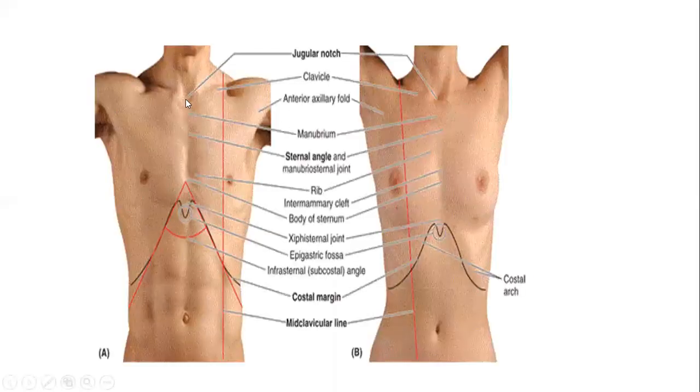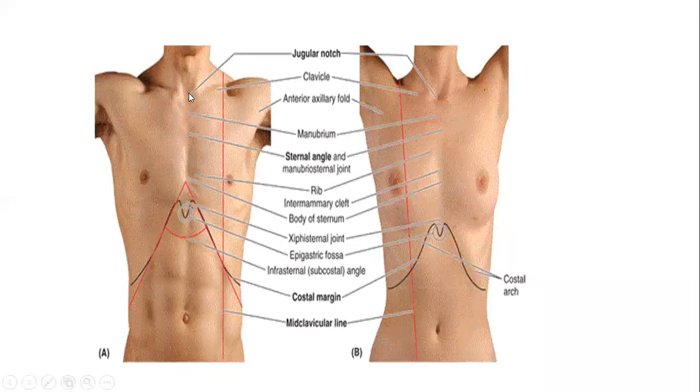Surface landmarks on the thoracic wall include the jugular notch. The jugular notch is a slight depression or fossa located just above the upper border of the manubrium, which is the upper part of the sternum,